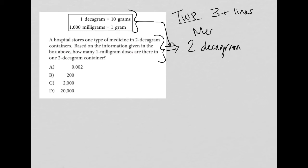I'll just say medicine. Based on the information given in the box above, how many one milligram doses are there in one two decagram container? So basically, I want to convert two decagrams into milligrams. I'll just put mg for space, for milligrams. The information provided to us will help us to do that.